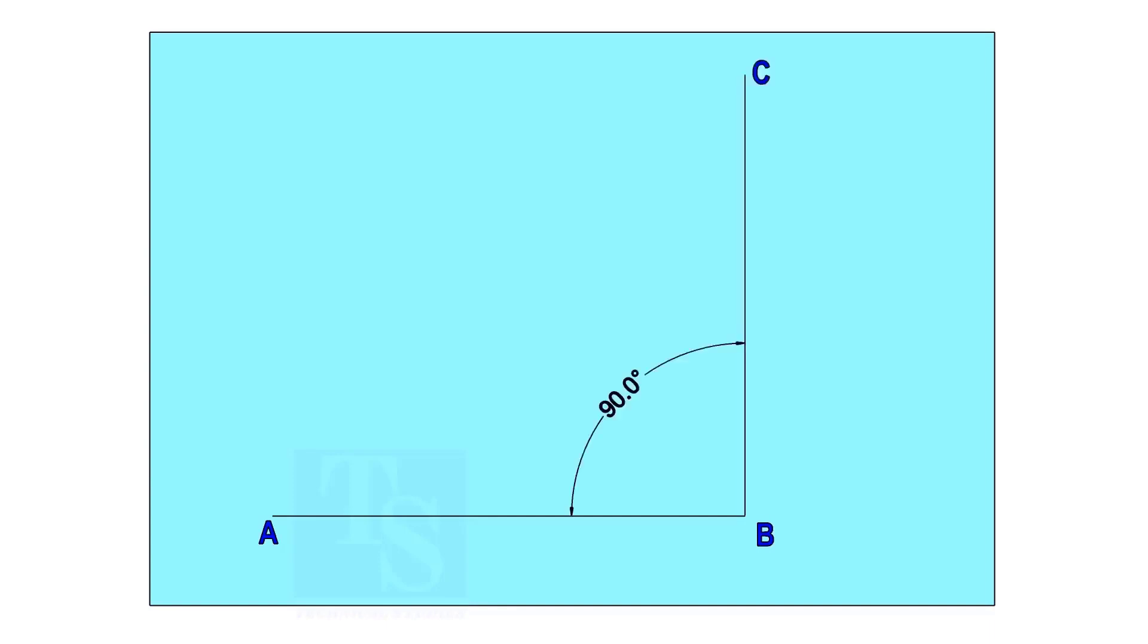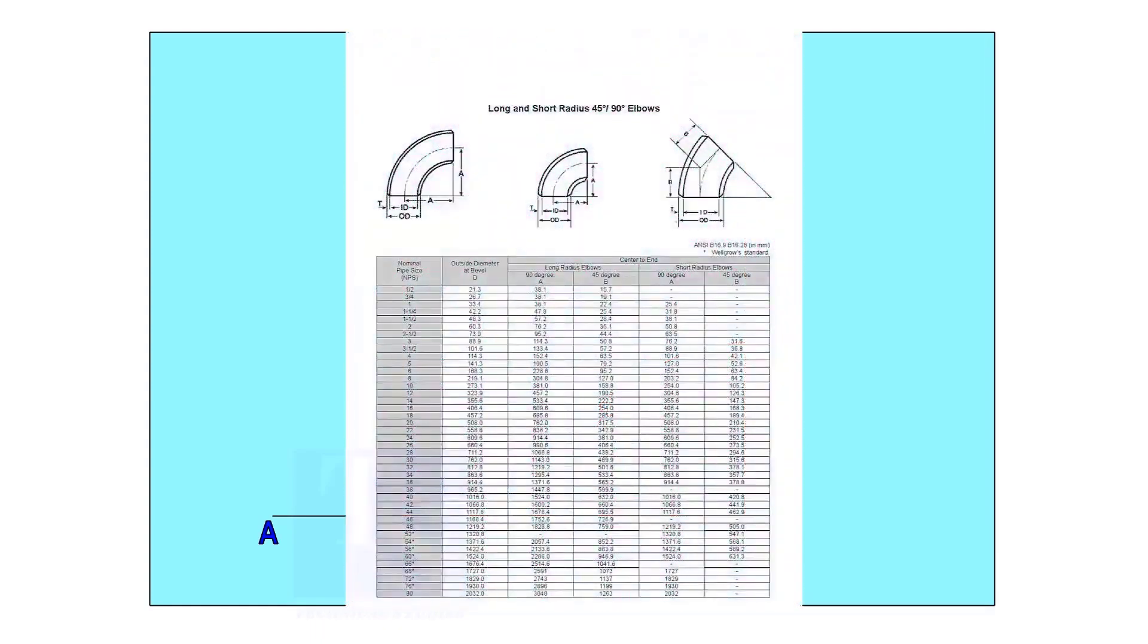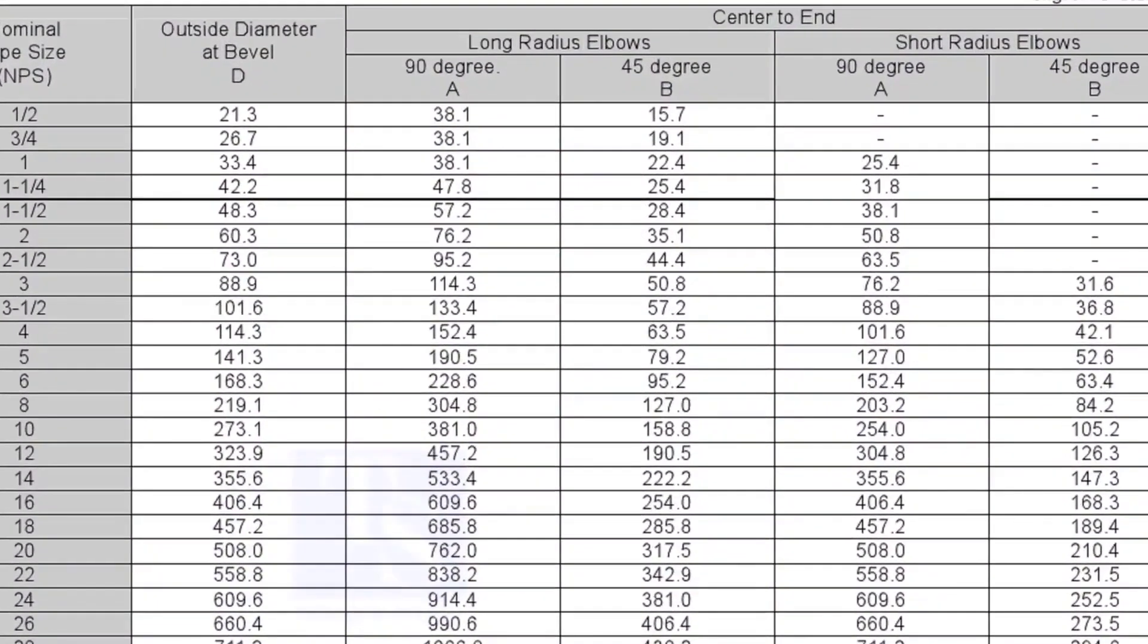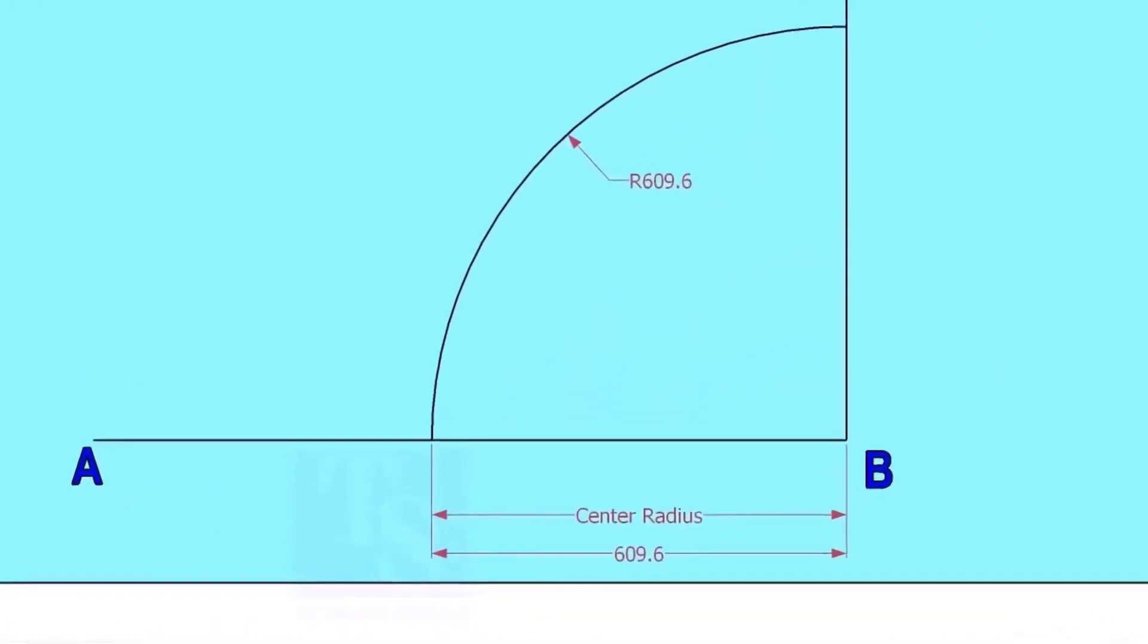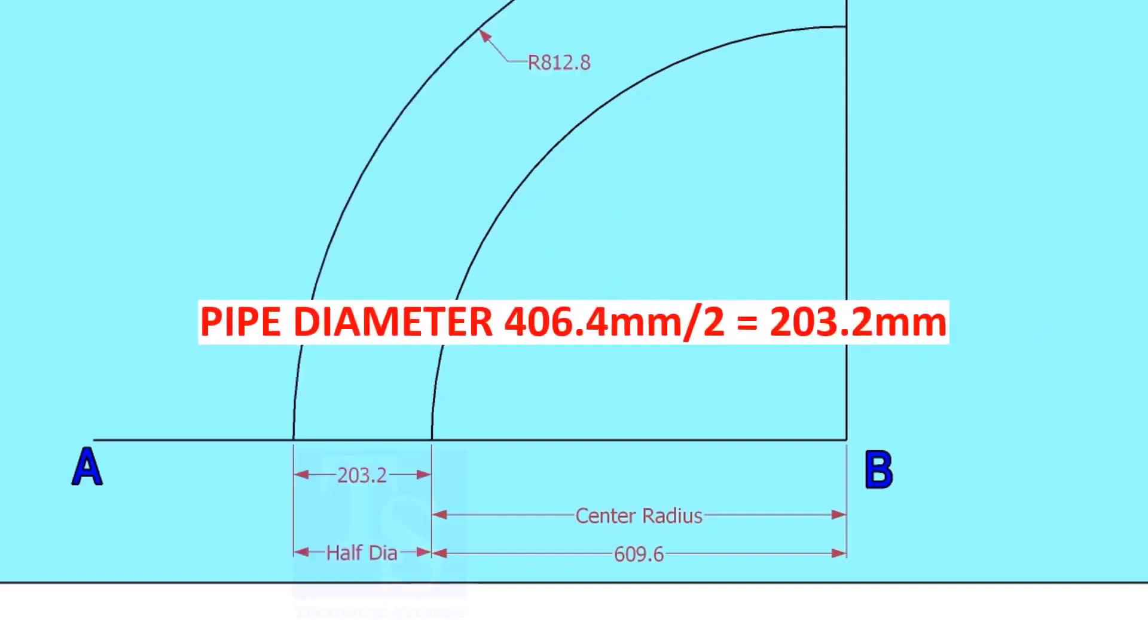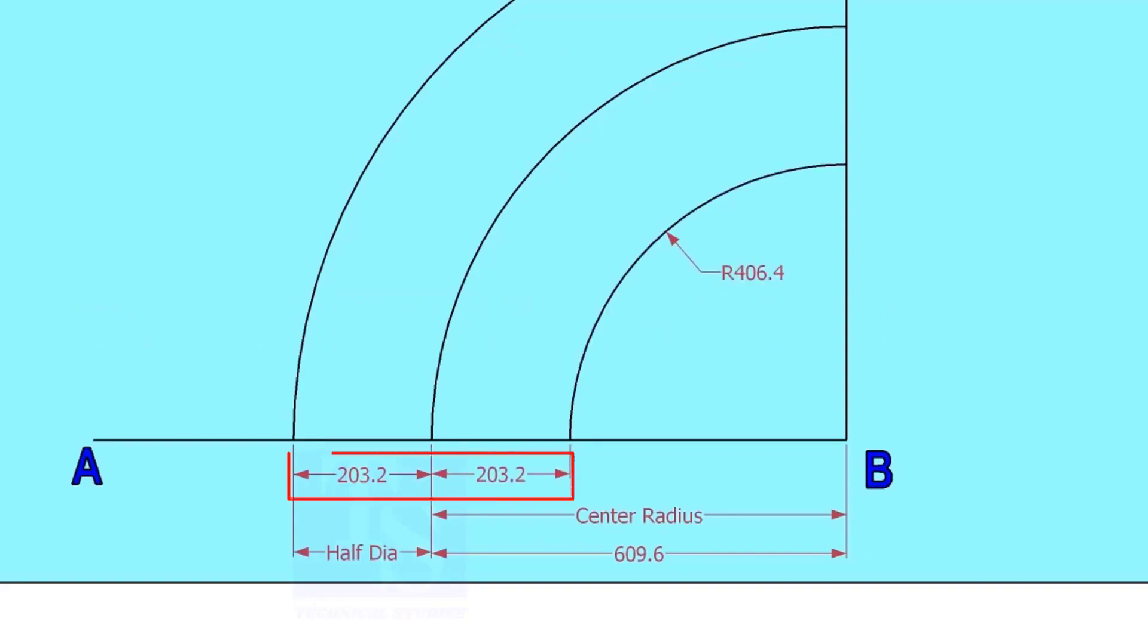Mark line AB and a perpendicular line BC. Let us check the center radius of 16 inch long radius elbow. Draw an arc with the center radius 609.6 millimeters. Mark the half OD arcs on both sides of the center line.